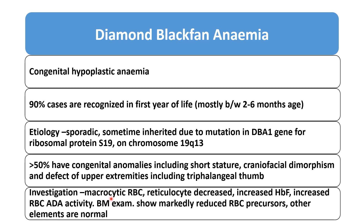On investigation, it shows macrocytic anemia with MCV more than 100 fL, decreased reticulocyte counts, increased hemoglobin F concentration, and increased RBC-ADA activity. Bone marrow examination shows markedly reduced RBC precursors while other elements of the bone marrow are normal.